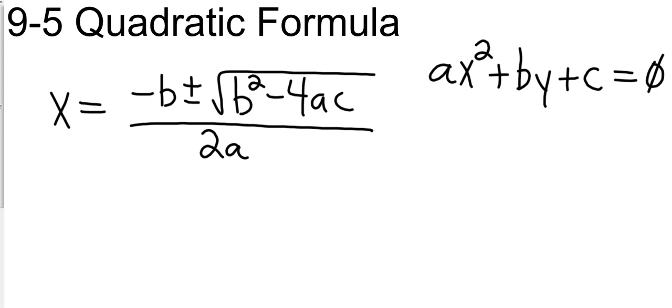From ax² + bx + c = 0, a is the number in front of the x squared, b is the number in front of the x, and c is the number that stands alone.